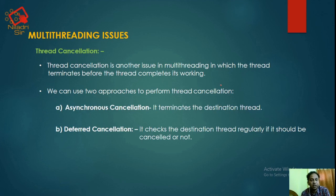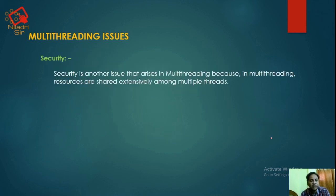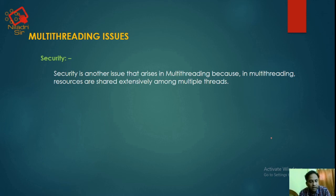Asynchronous cancellation basically terminates the destination thread immediately. Deferred cancellation checks the destination thread regularly to see if it should be cancelled or not. Next is security — security is another issue in multithreading because resources are shared extensively among multiple threads, creating chances for security vulnerabilities.